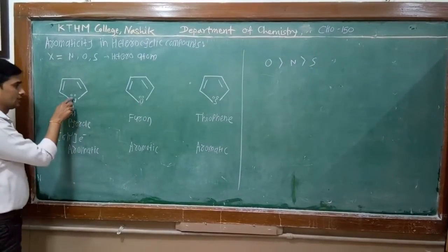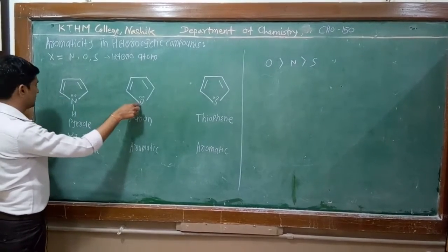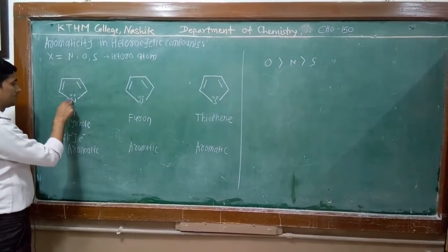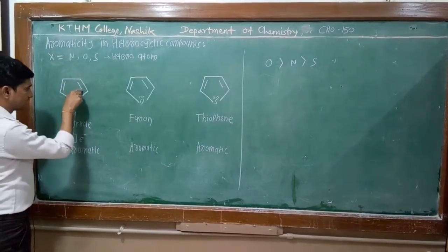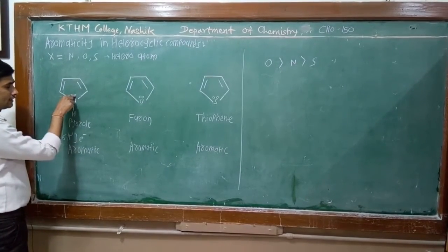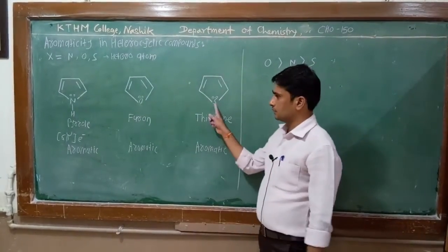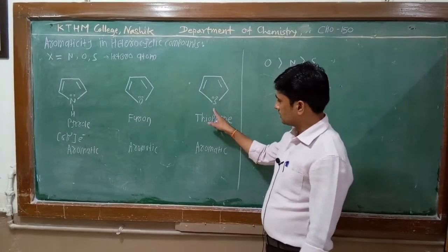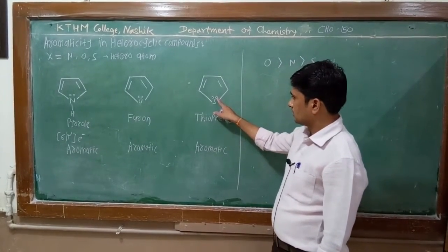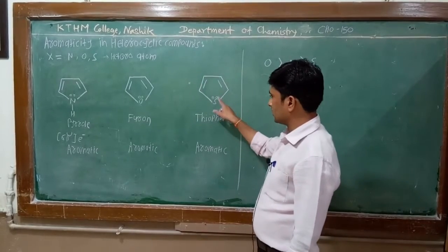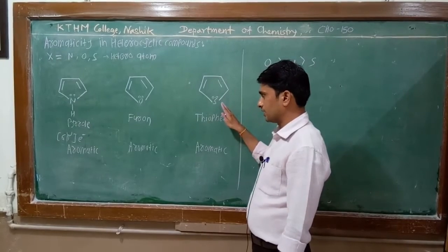In the case of nitrogen, the electronegativity is less than oxygen. Therefore it gives its lone pair of electrons to complete the aromaticity. Sulfur is less electronegative still, so it gives its lone pair of electrons to the conjugation to complete the aromaticity very easily — therefore it is more aromatic.